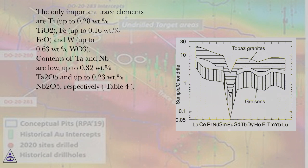The only important trace elements are Ti up to 0.28 wt% TiO2, Fe up to 0.16 wt% FeO, and W up to 0.63 wt% WO3.